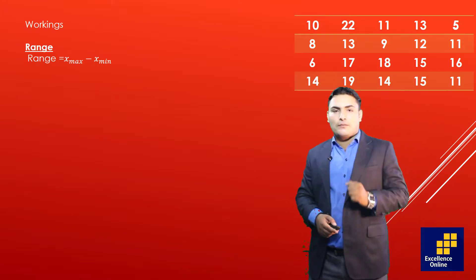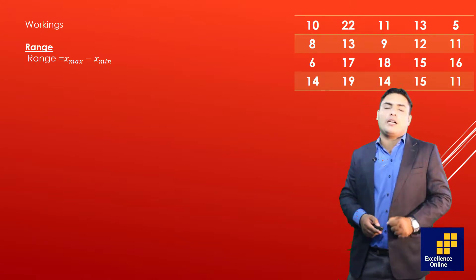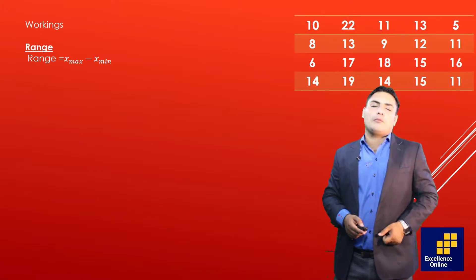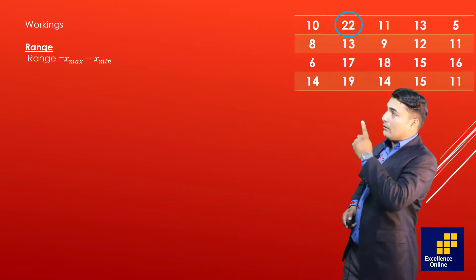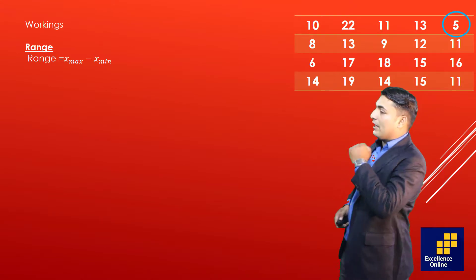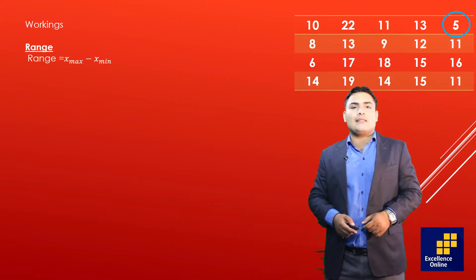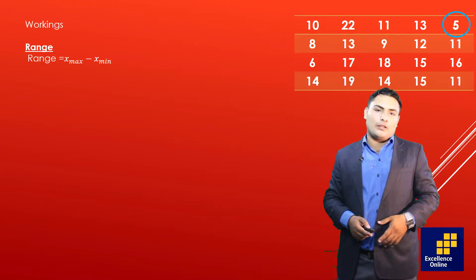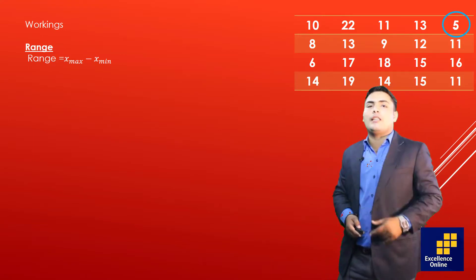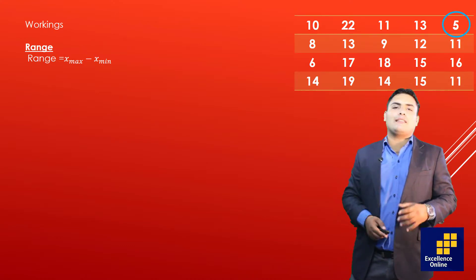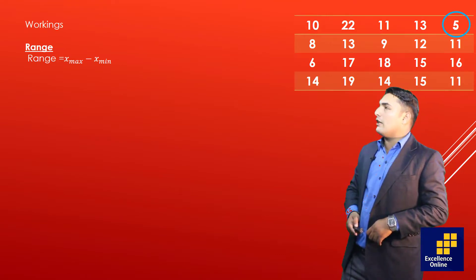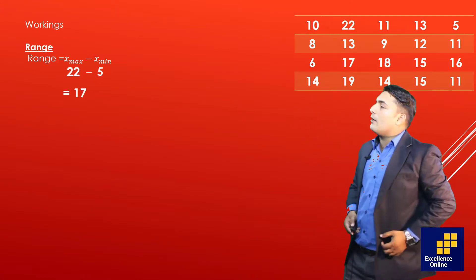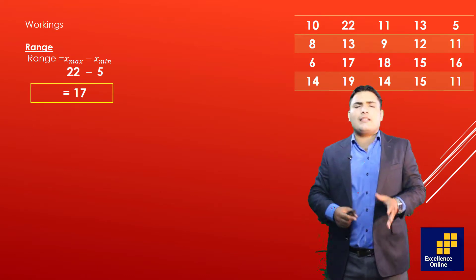The first thing to find is the range. The range formula is maximum value minus minimum value. The data is available on the screen. The maximum value is 22 and the minimum value is 5. The class interval will start at the minimum value, and the last group's upper limit is the maximum value. Substituting into the formula: 22 minus 5 gives us a range of 17. The range represents data dispersion.